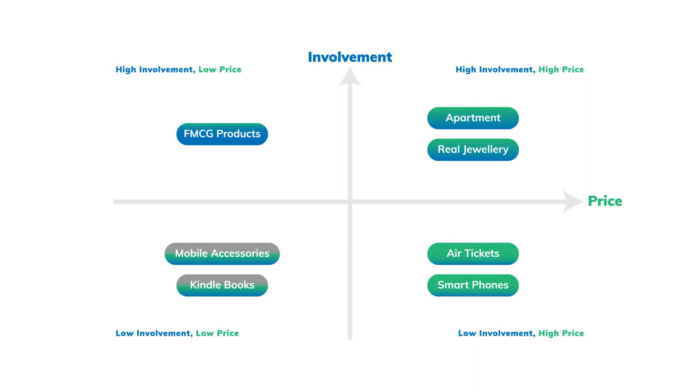Let's understand the third quadrant, which is Low Price and Low Customer Involvement. A typical telecom company product — like a mobile recharge or a mobile accessory — would be products that are standardized, hence low customer involvement and low priced in nature.